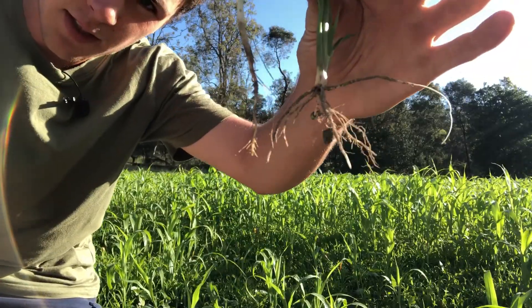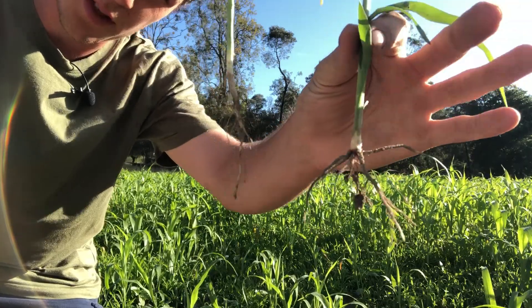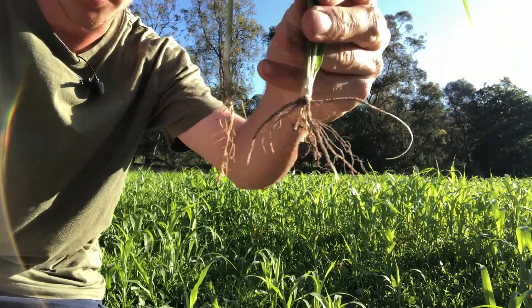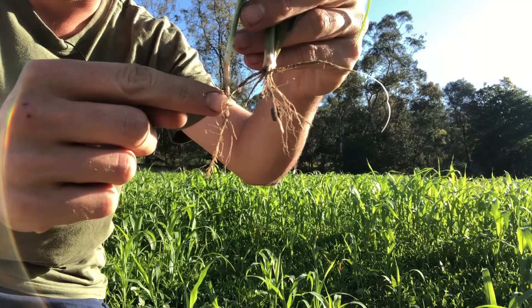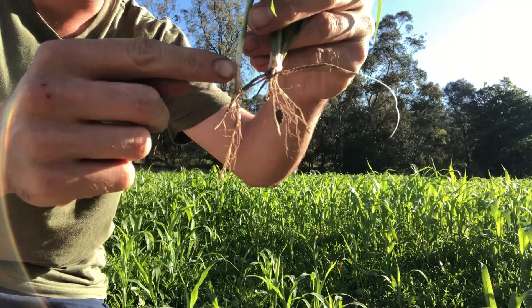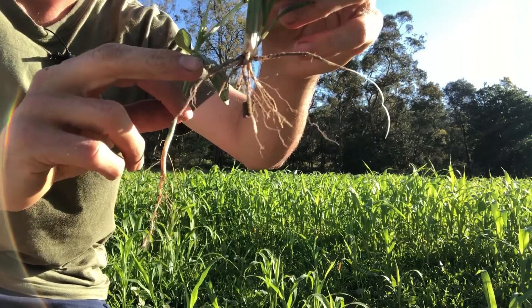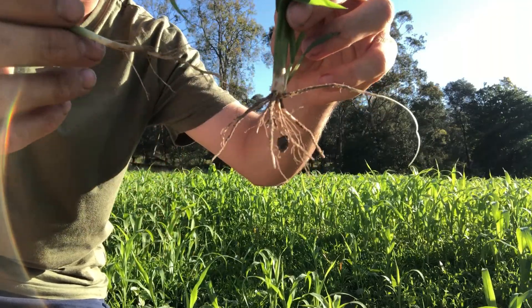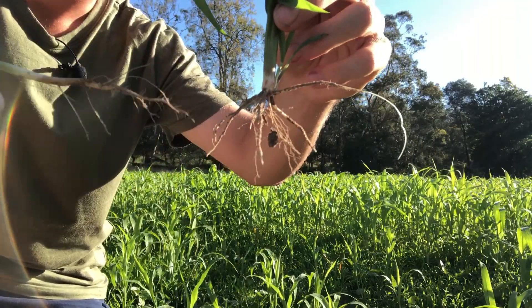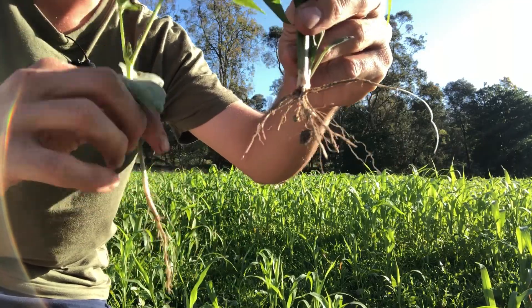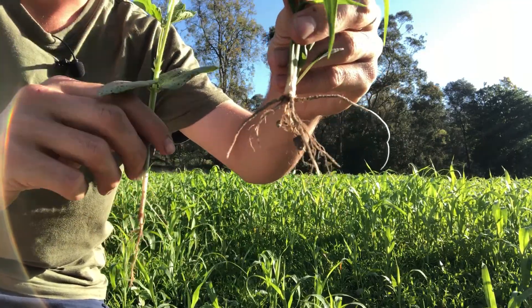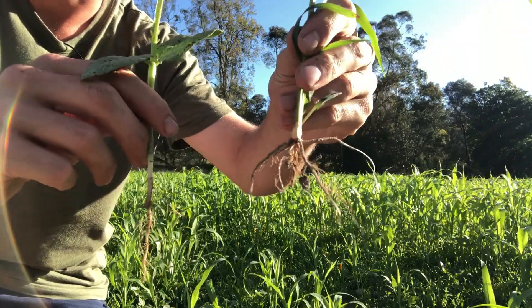You might be able to see here how the root systems of these two plants are quite different. The legume has a single main root coming down that's called a tap root, whereas the sorghum has a more spread out fibrous root system. This is really important when determining the interaction between these two plants.